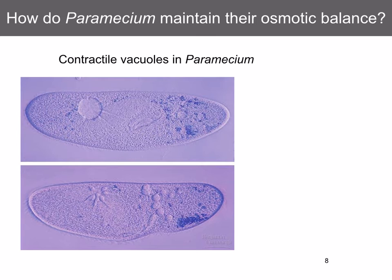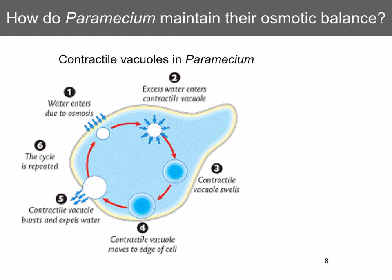How do paramecium maintain osmotic balance? Paramecium usually live in a hypotonic environment, which means that water diffuses from the outside of the cell to the inside. They need to remove this water, and they do so by active transport using special organelles called contractile vacuoles — you can see one on the left. These contract and force water out of the paramecium. Water enters due to osmosis, collects in the contractile vacuole, which expands, moves to the edge of the cell, and expels the water by exocytosis.